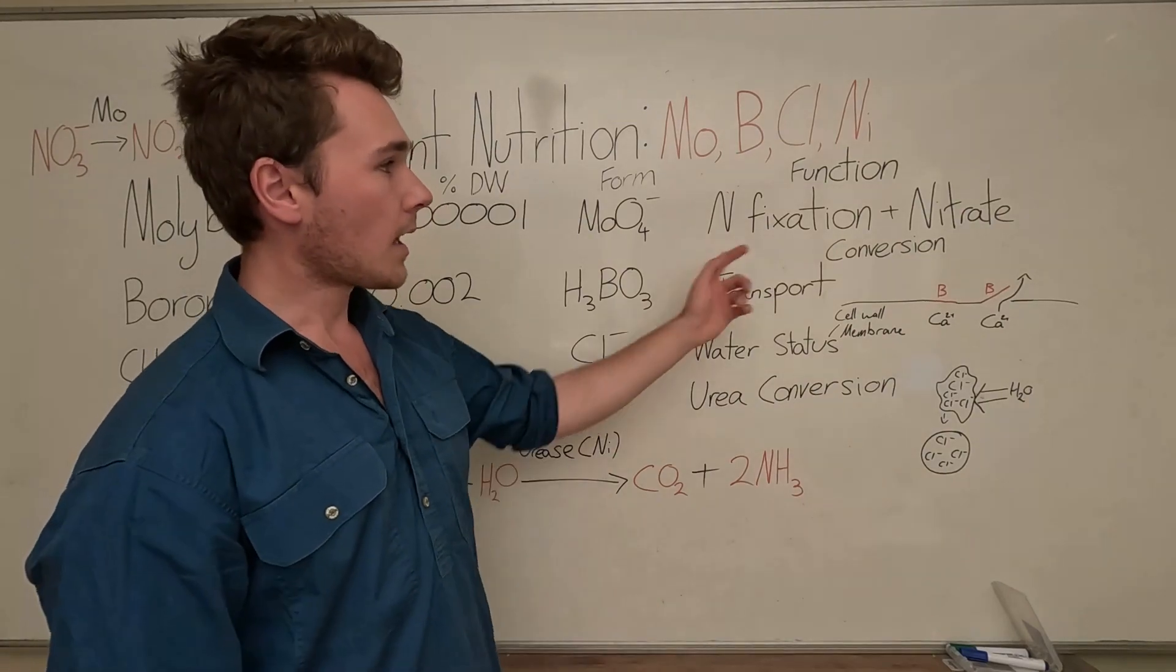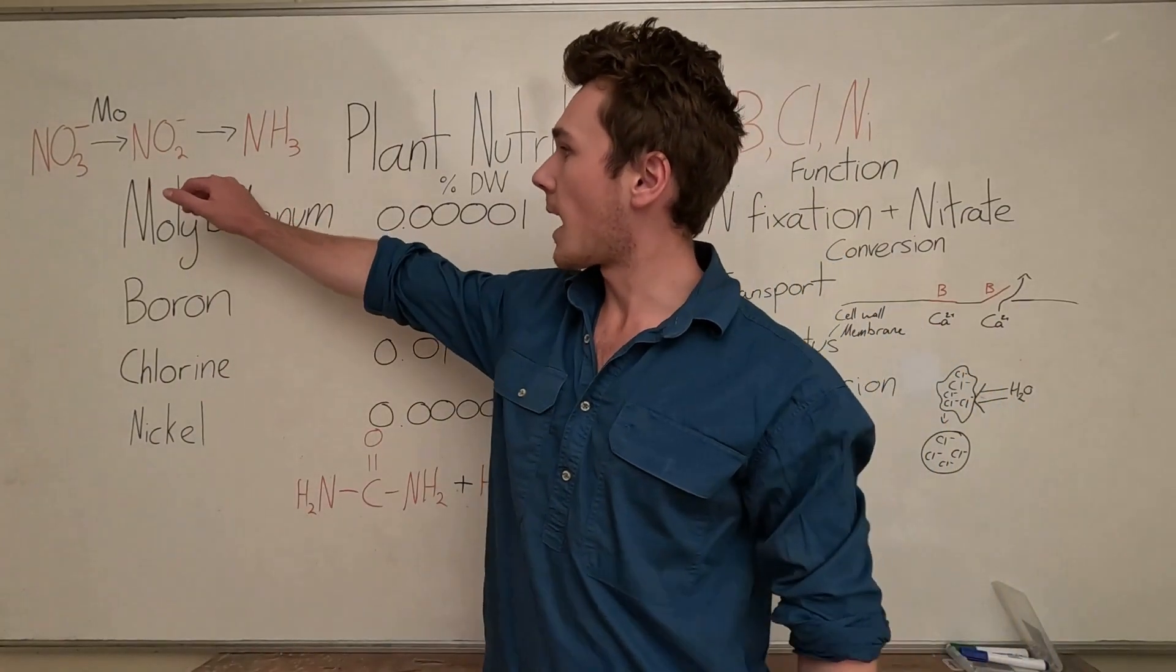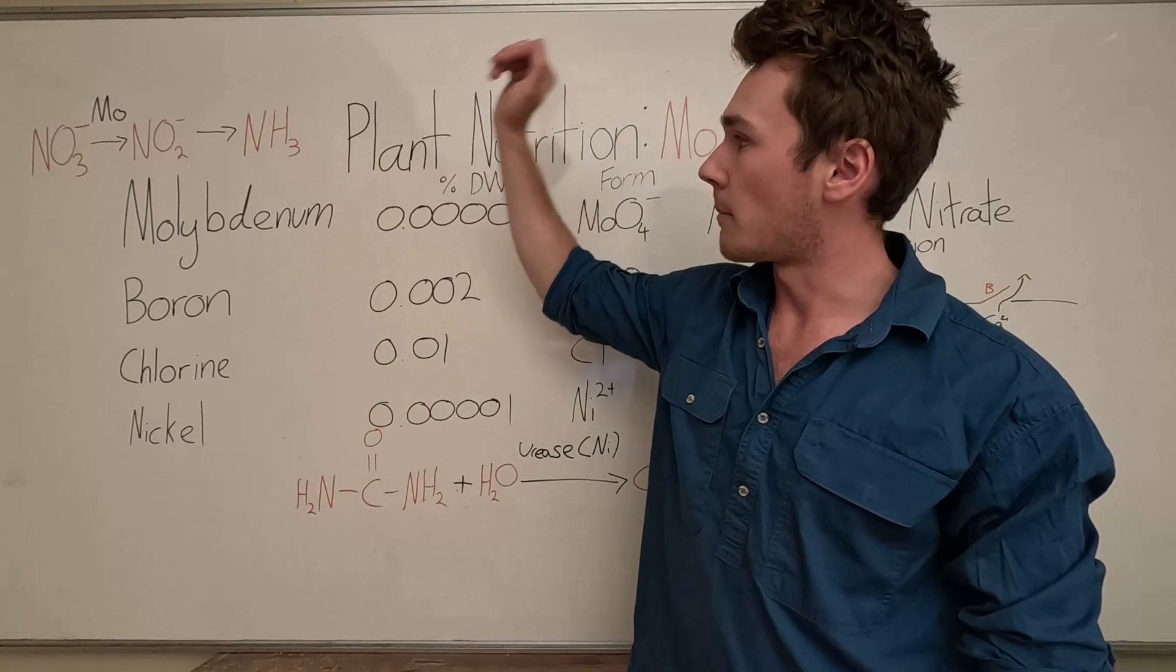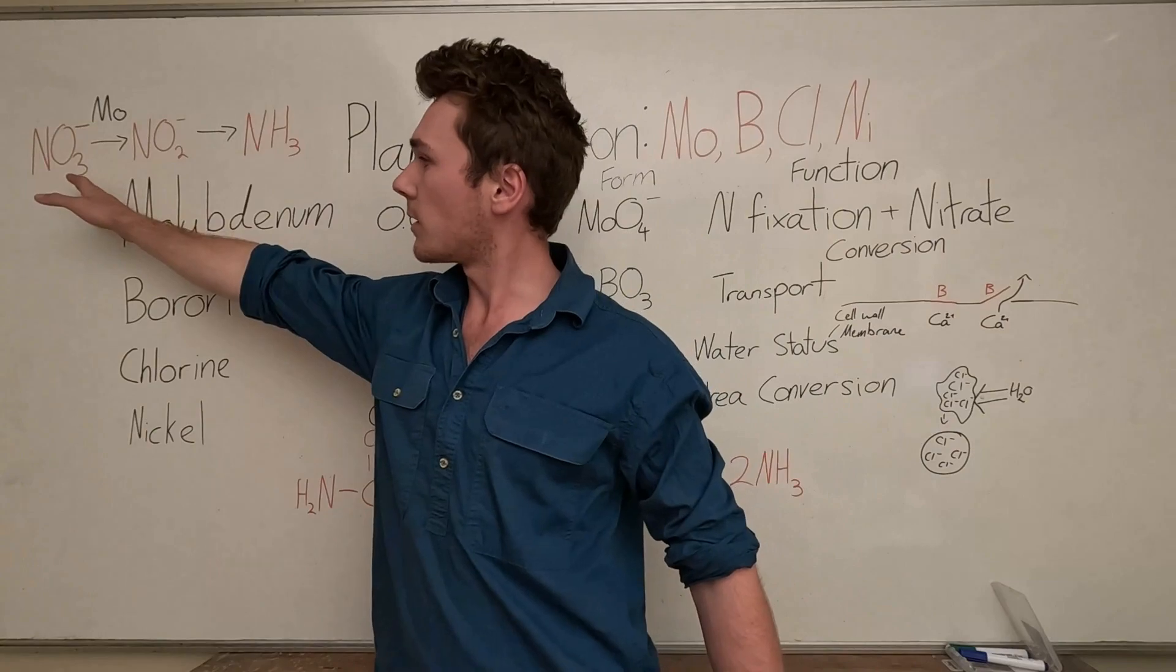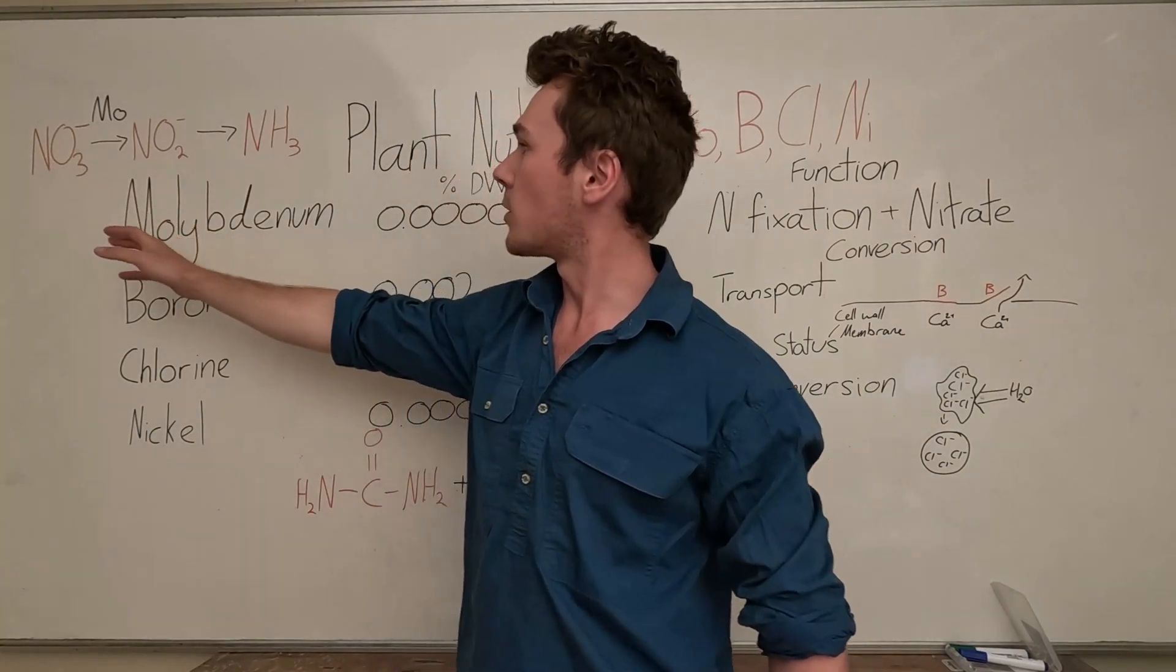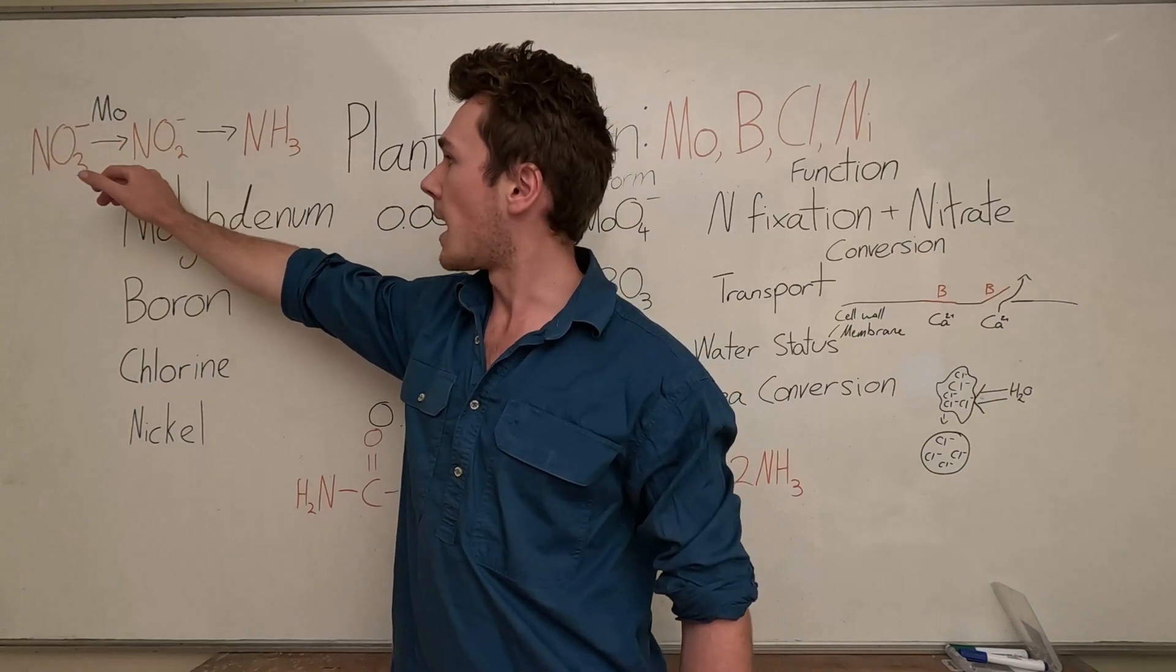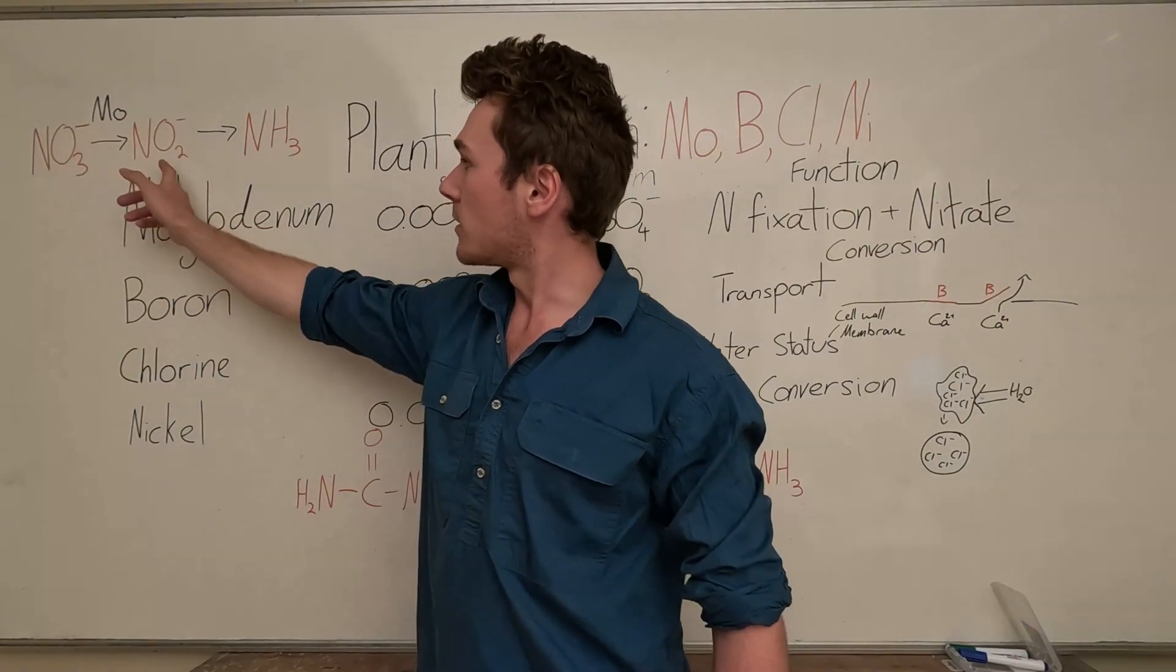The other function is nitrate conversion. If you see over here, we have nitrate to nitrite and then to ammonium. This is the form that plants can use. They can't really use nitrate; they need to convert it into ammonium.